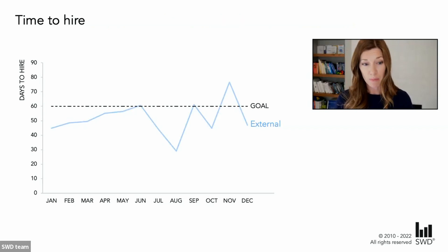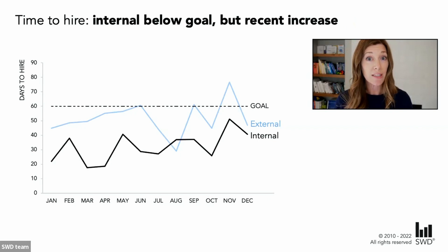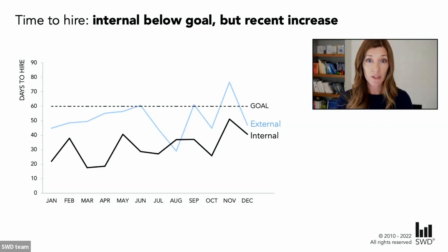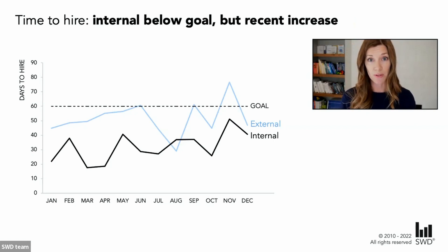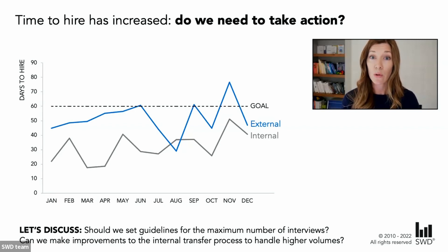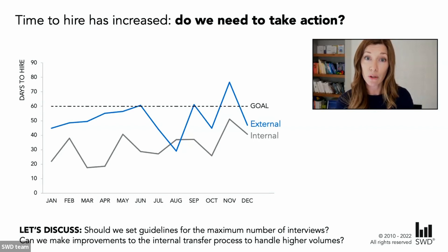Pushing that to the background, let's layer on our internal time to hire — the time it takes to get internal transfers into new roles. We see all those points fall below 60, our goal, which is great. But notice there is a general increase in time to hire over the course of the year. So let's talk about what we want to do next: does it make sense to introduce some guidelines for our maximum number of interviews? Are there efficiency gains we might look for in the internal process? What would you like to do?